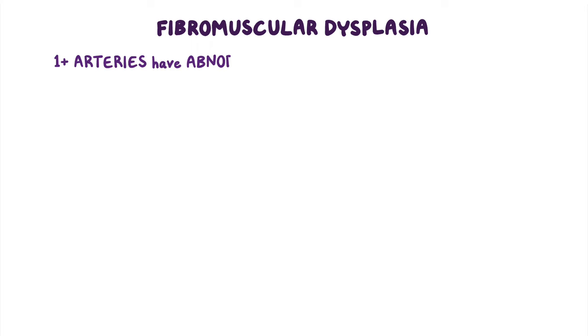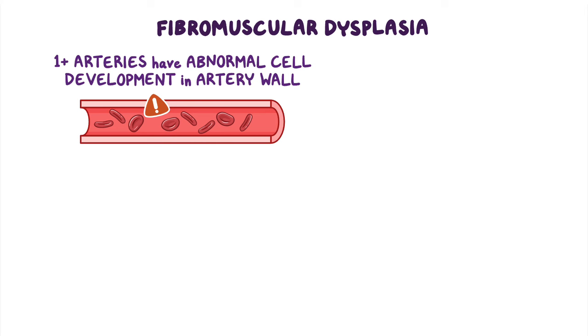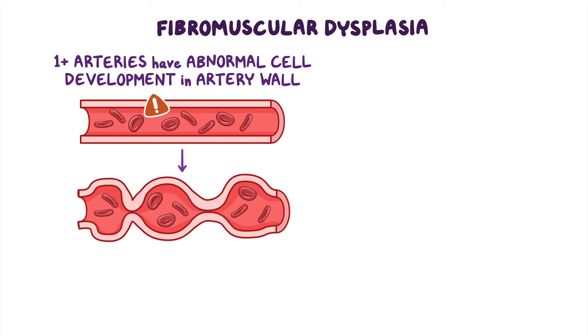Fibromuscular dysplasia is a vascular disorder that causes one or more arteries in the body to have abnormal cell development in the artery wall. This causes portions of the affected vessels to narrow or bulge, resulting in a string of beads appearance instead of a uniform cylinder.